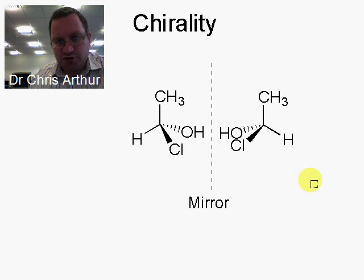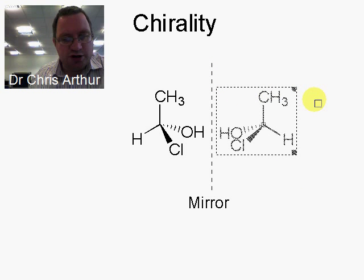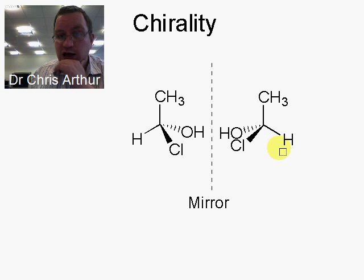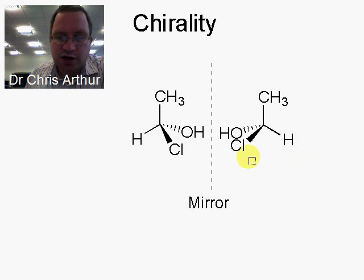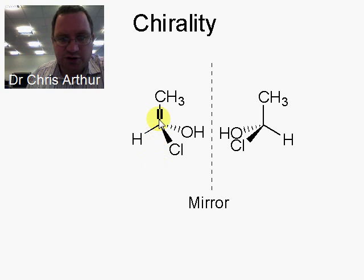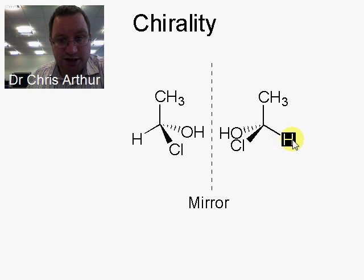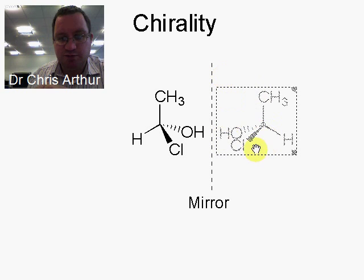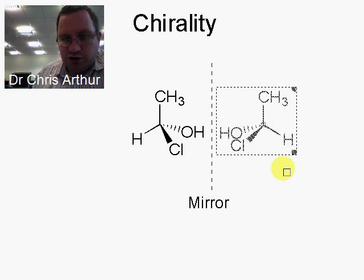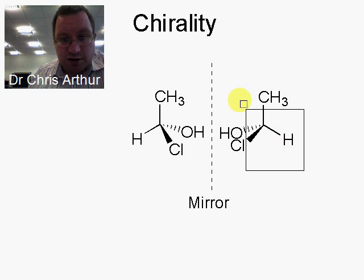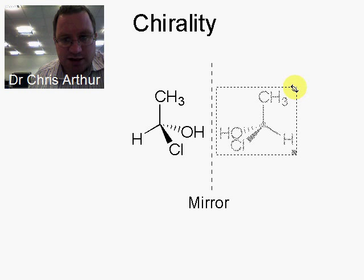Normally I would demonstrate this with a three-dimensional model. Today what I'm going to do is rotate this molecule in the software to try to demonstrate that the mirror images are non-superimposable. If you look at this, we have the chlorine and the hydroxyl group. Think of an axis down through this carbon in the centre. The chlorine and the hydroxyl group in this one are on the right, whereas in this one they're on the left. The hydrogen here is on the right, whereas in this one it's on the left. I'm going to rotate this molecule and try to put the chlorine and the hydroxyl group on the right-hand side, and see what happens to the other two groups. I'm just highlighting this and then rotating it in the software.